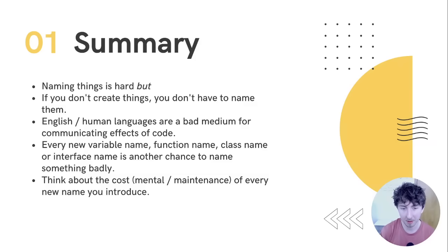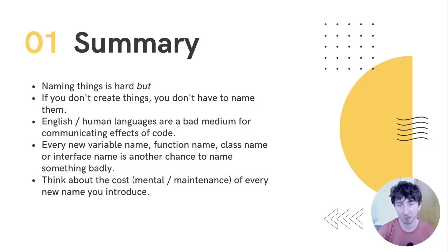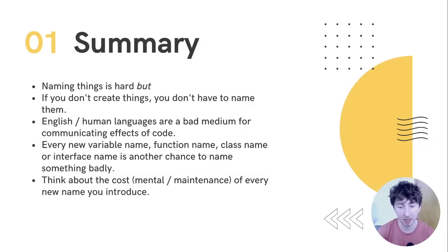English and other human languages are generally poor at describing technical concepts or side effects of code. As a result, every new variable name, function name, class name, interface name, file name, directory name, command line argument — every one of those is another chance to name something badly and miscommunicate the effect of some part of the code. Abstractions aren't free, and every new name adds mental overhead and long-term maintenance cost. Think carefully and treat new names seriously.